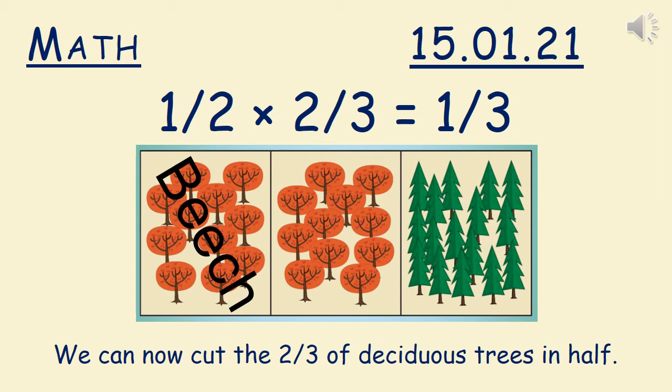So as you can see by the picture below, we can now cut two thirds of the deciduous trees in half, leaving one third as beech, one third as deciduous and one third as evergreen.